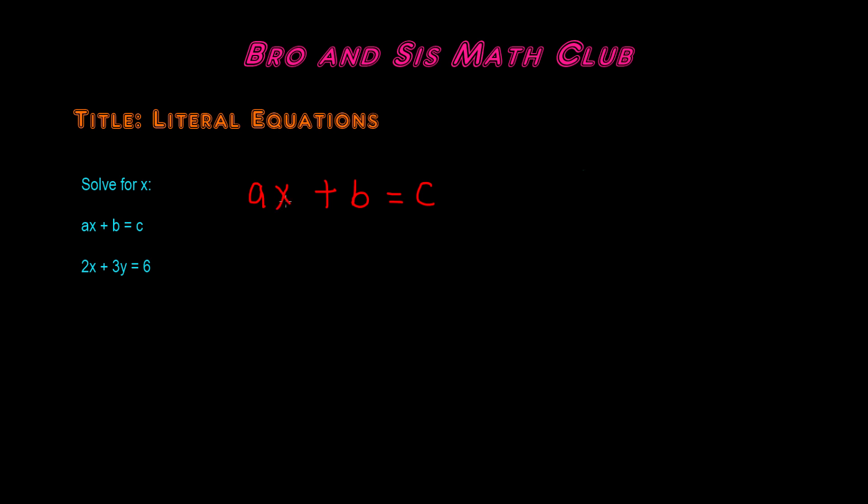So here, x is being multiplied by a, and it's being added to b. So we need to get rid of the a and the b. So what I mean by getting rid of it is we have to do inverse operations so that we can move them to the other side.